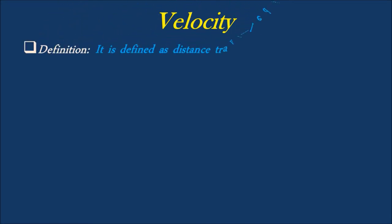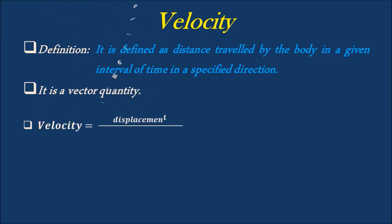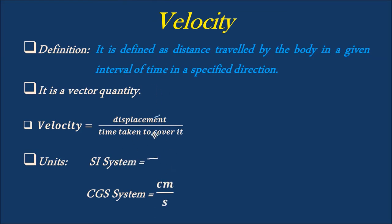Now, let's discuss about velocity. Velocity is defined as distance traveled by the body in a given interval of time in a specified direction. Velocity is a vector quantity as it has both magnitude and direction. Velocity is expressed as displacement divided by the time taken to cover it. Velocity is expressed in SI system as meter per second, while in CGS system it is expressed as centimeter per second.